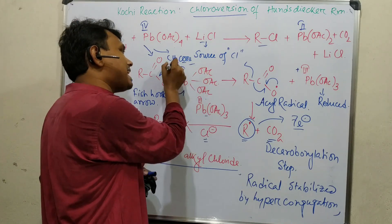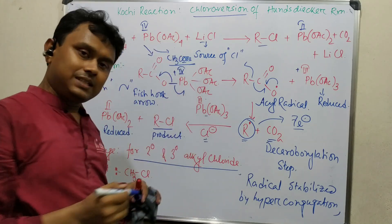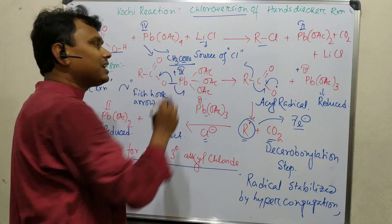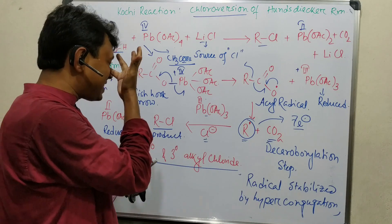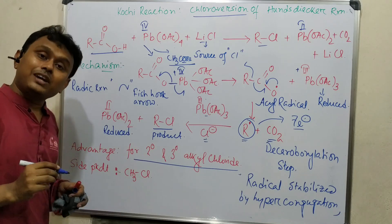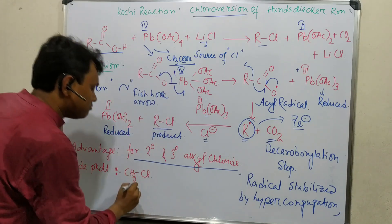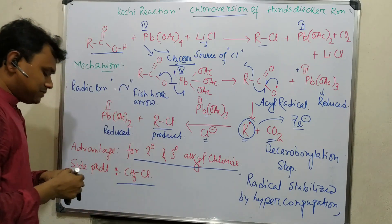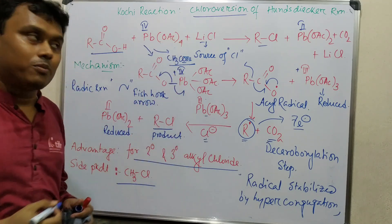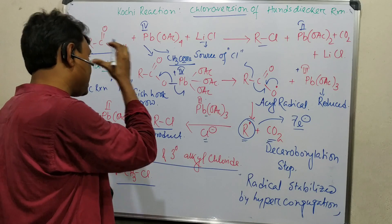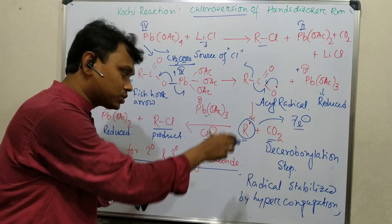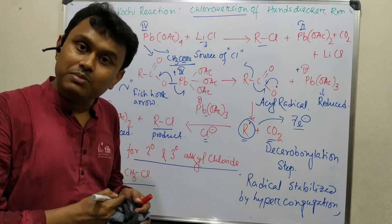You can see in the first stage I have shown, one carboxylic acid is taken and another carboxylic acid, acetic acid, is produced from lead tetraacetate. In medium, two types of carboxylic acid are present. This acetate can also undergo the reaction, and that's why the side product of this reaction is methyl chloride.